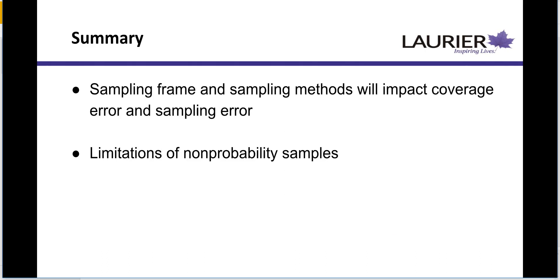In summary, your sampling frame and sampling methods are going to impact two sources of error: coverage error — are you covering the whole population you think you are? — and sampling error — is your sample decent enough to make generalizations? And of course, we also have the limitations of non-probability samples to consider.